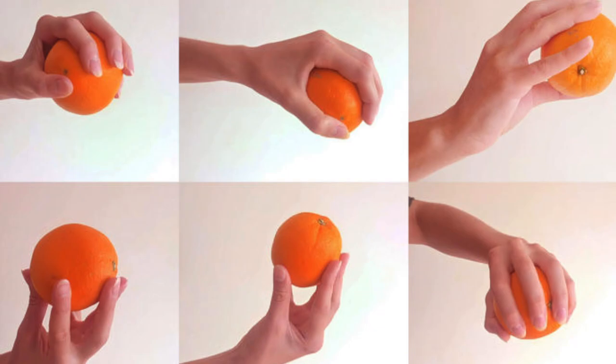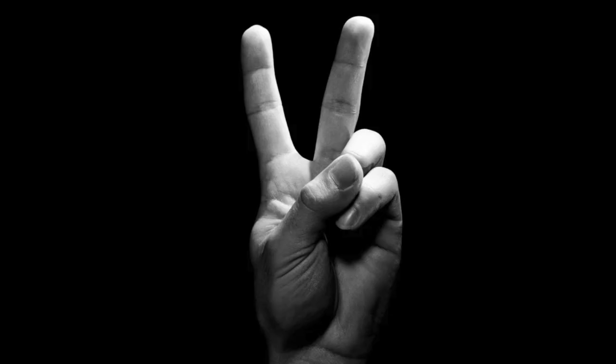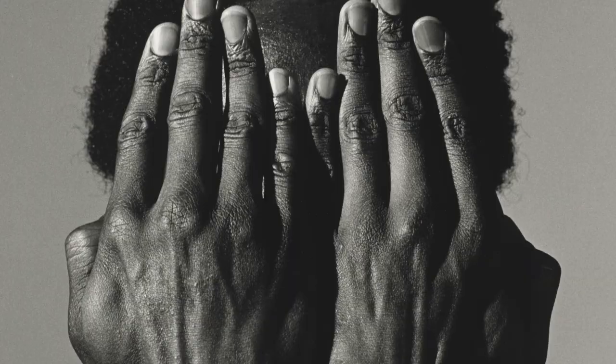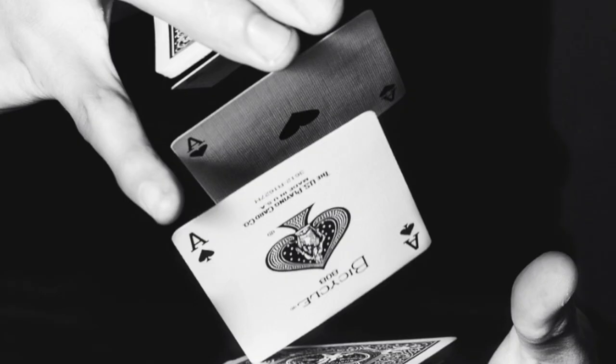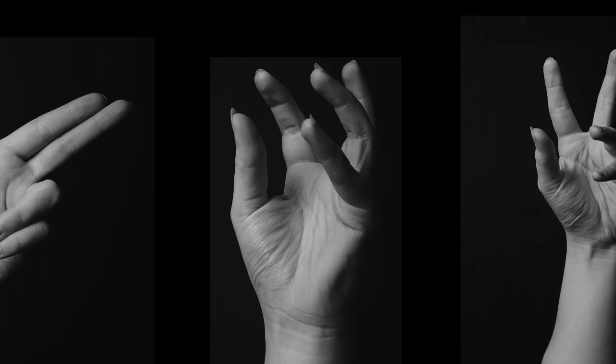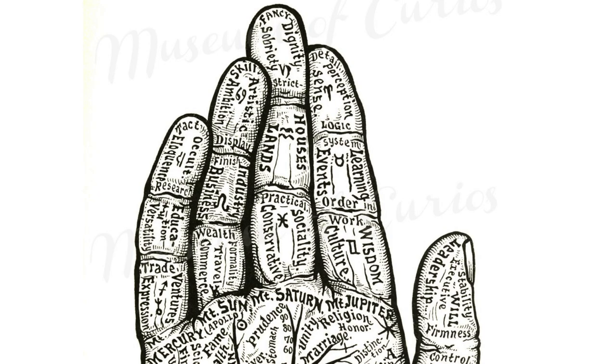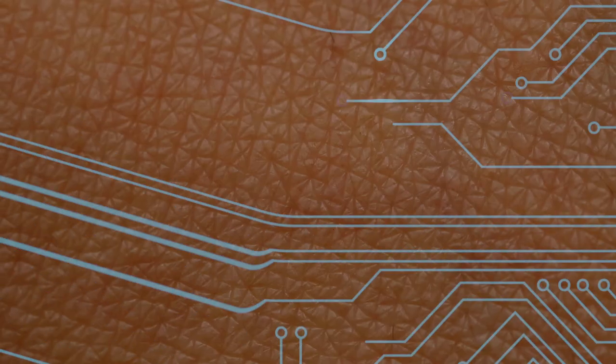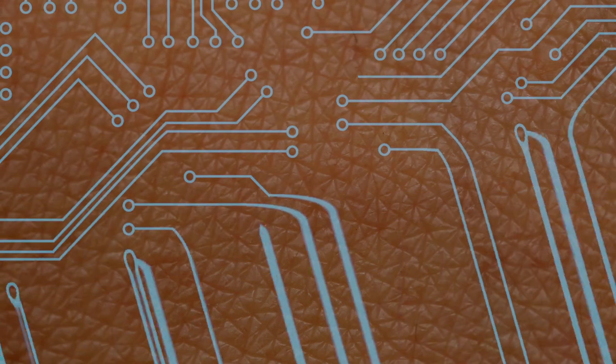If you think about the human hand, a marvel of engineering, more than 25 joints, individual degrees of freedom, more than 40 muscles articulating those joints. But then also the sensing mechanism. We have hundreds of individual mechanoreceptors in each fingertip that are constantly collecting different kinds of information about touch.